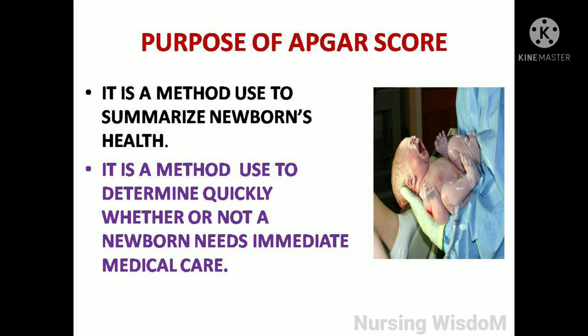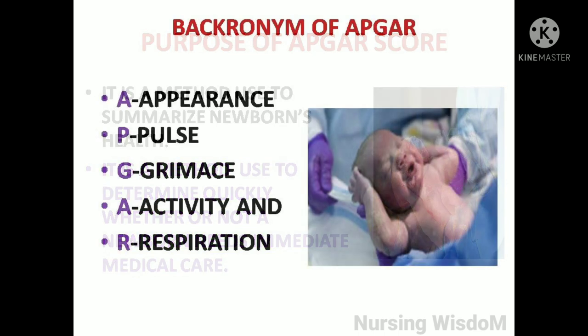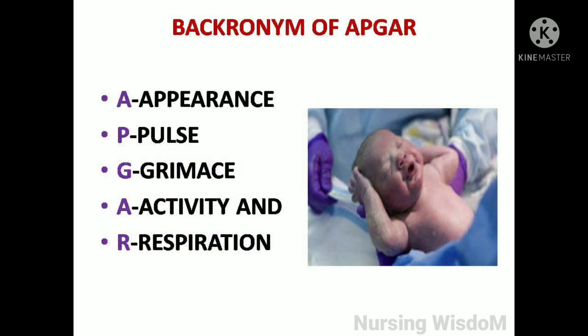The purpose of the APGAR score is to summarize the newborn's health and to determine quickly whether or not a newborn needs immediate medical care. APGAR stands for A for Appearance, P for Pulse, G for Grimace, A for Activity, and R for Respiration.